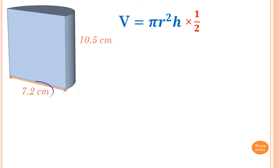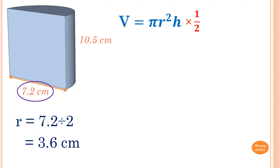We know that the diameter of this cylinder is 7.2 centimeters, so the radius is equal to 7.2 divided by 2, which is 3.6 centimeters. All we need to do now is substitute the values into the formula.